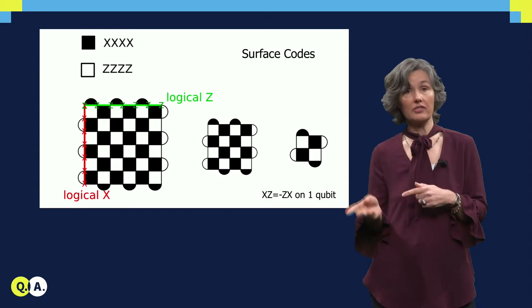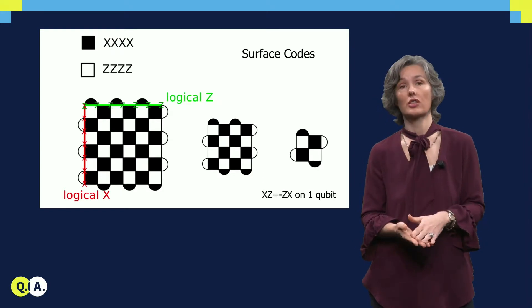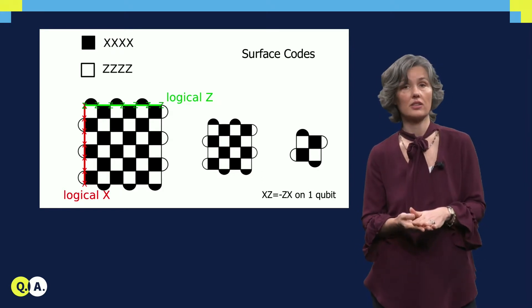Shown on the very right is the smallest interesting surface code, which has 9 qubits and it has distance 3.